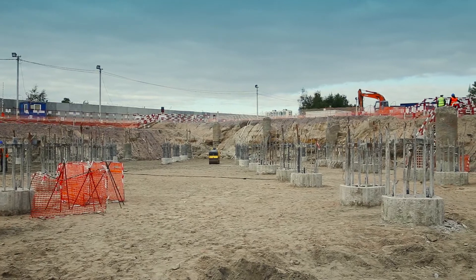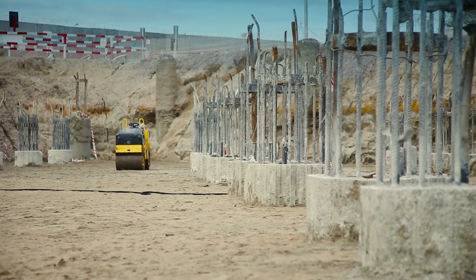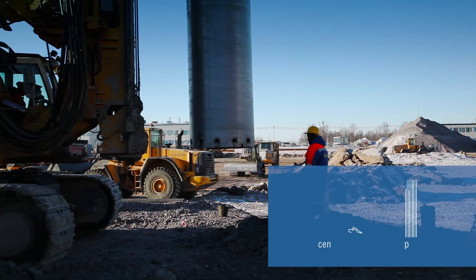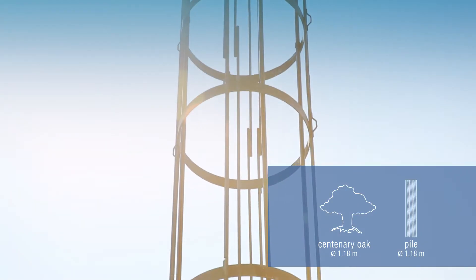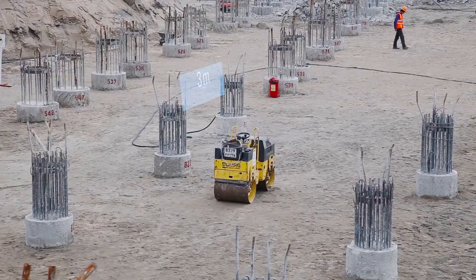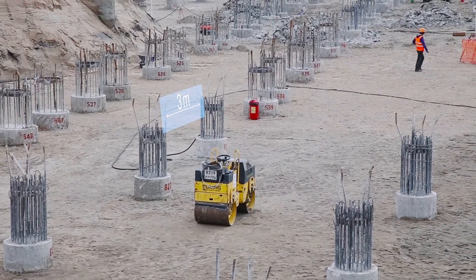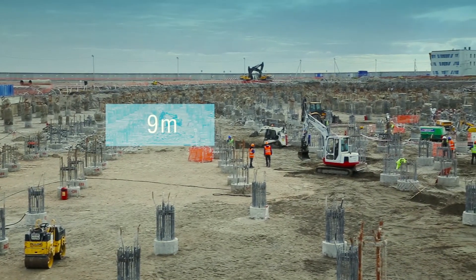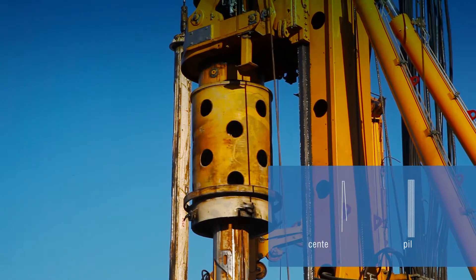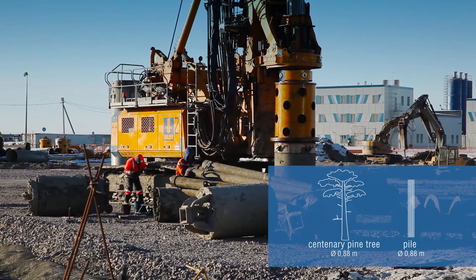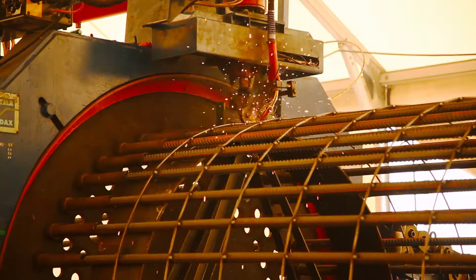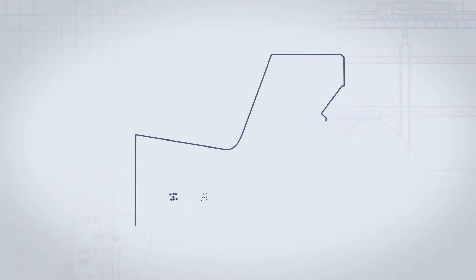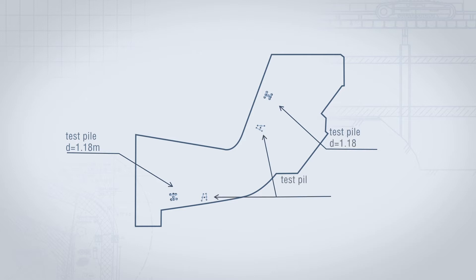Piles in the foundation are installed at a variable spacing. Piles 1.18 meters in diameter installed at 3-meter spacing are used for high-load parts under the cores of the buildings, whereas for low-load parts of the foundation piles are installed at a wider 9-meter spacing and these are less than a meter in diameter. The design calculations are substantiated with preliminary tests of 4 test piles, 2 piles of the maximum and 2 piles of the minimum diameter.